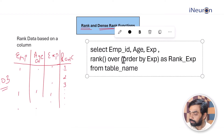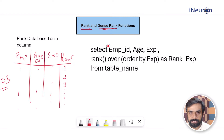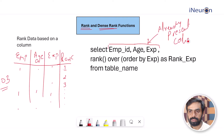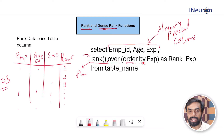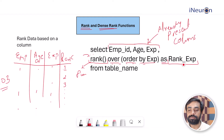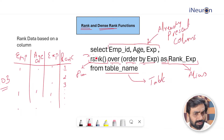Let's understand each part of this syntax. Employee ID, age, and experience are already-present columns. RANK() is the function being applied. SQL needs to know on what to rank, so you provide OVER (ORDER BY experience), and give it an alias like 'rank of experience'. Finally, you specify the table you're fetching data from.